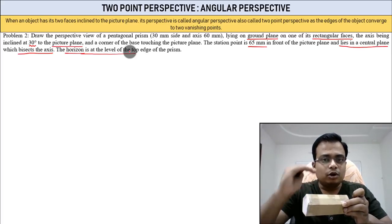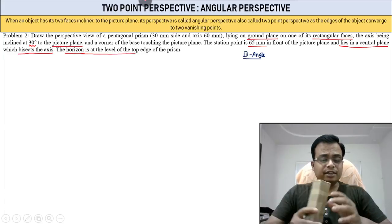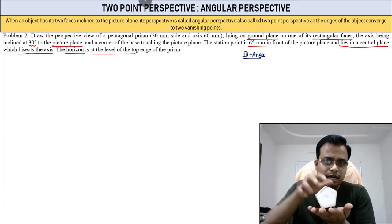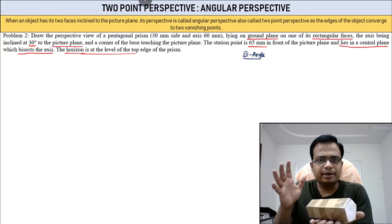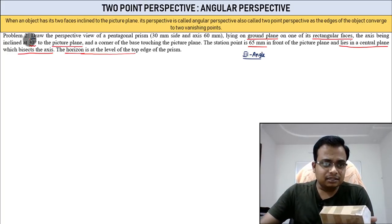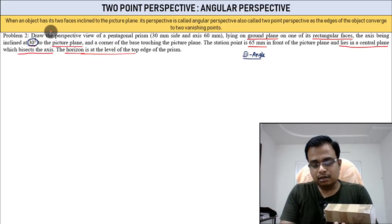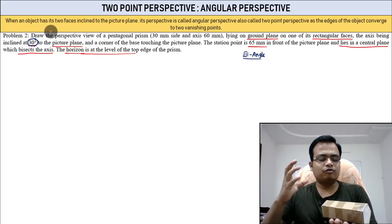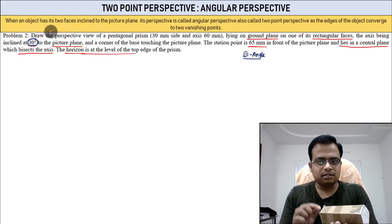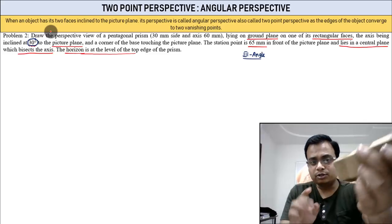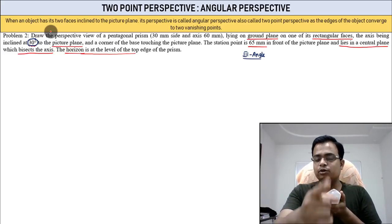The rectangular face is in the ground plane and the axis is making an angle of 30 degrees. Following the standard procedure from projection of solids: when the axis is inclined to the VP, you smash it onto the VP. The true shape of the base is seen from the front, so you draw the front view first.